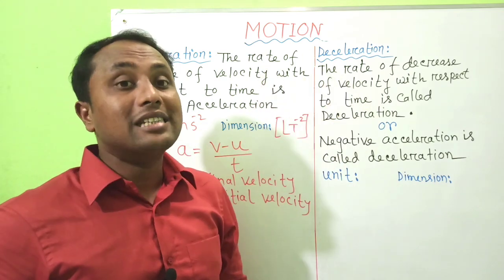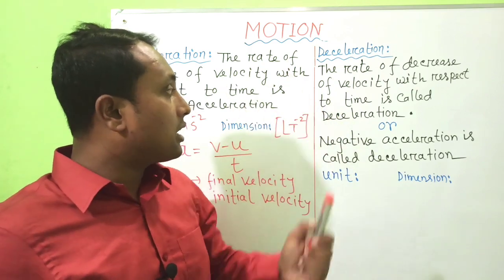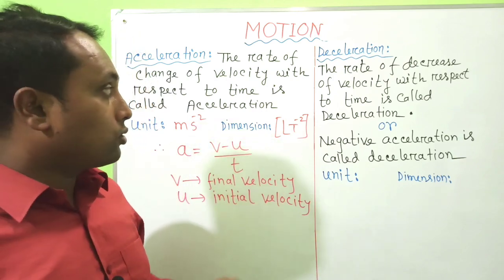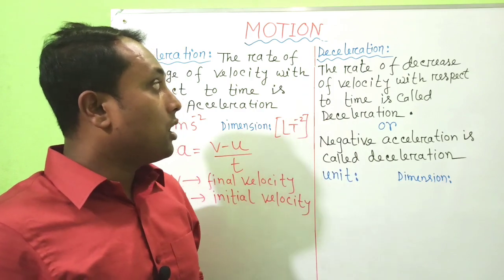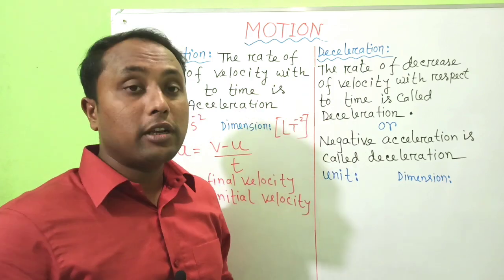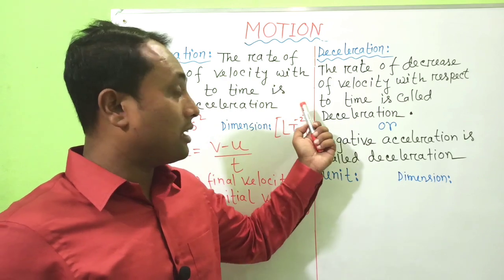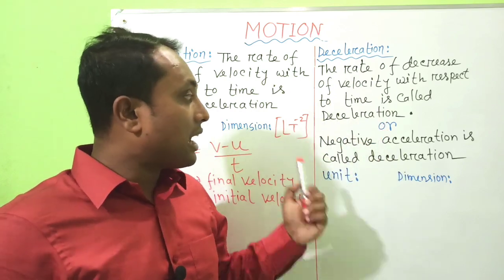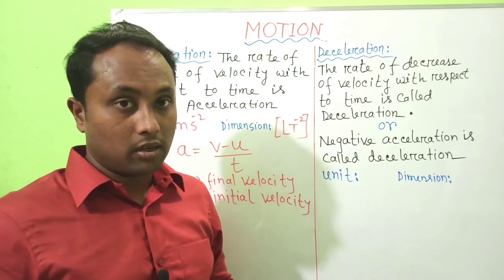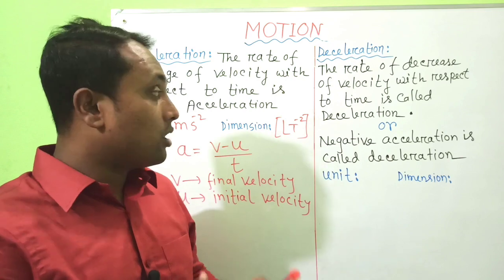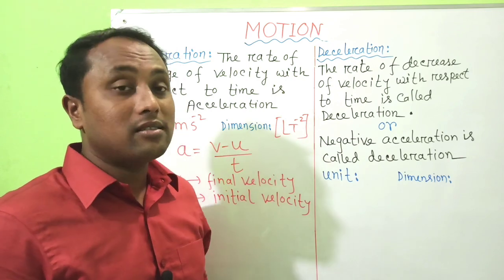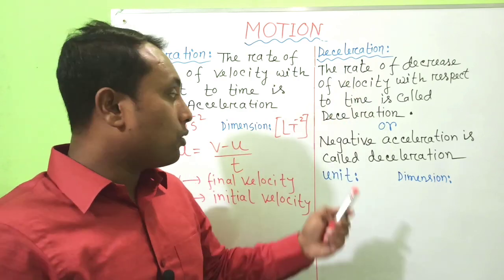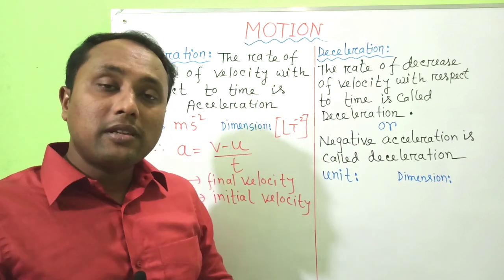The next definition is Deceleration. The rate of decrease of velocity with respect to time is called deceleration. If an object's velocity gradually decreases with respect to time, that is called deceleration. Another way to define it: negative acceleration is called deceleration. When velocity decreases with respect to time, the acceleration is negative.